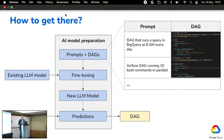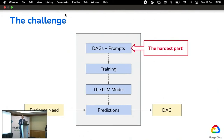Our proposal is to use existing pre-trained large language models, either open source or proprietary. Assuming you have a dataset of prompt-and-DAG pairs, we can use transfer learning — specifically fine-tuning — to produce a new large language model that acts as an intermediate component translating a business need into DAG code. It sounds simple, but the hook is in having that dataset of DAGs and prompts.